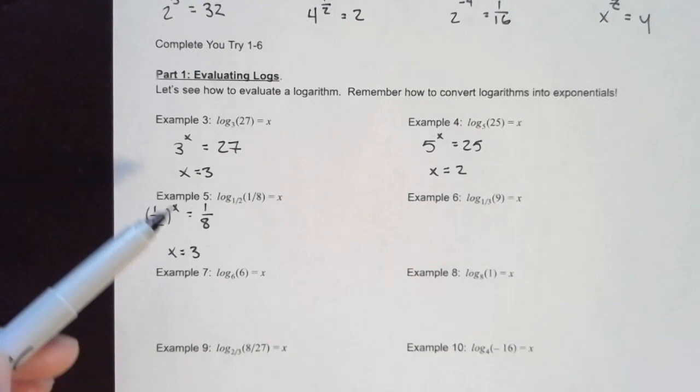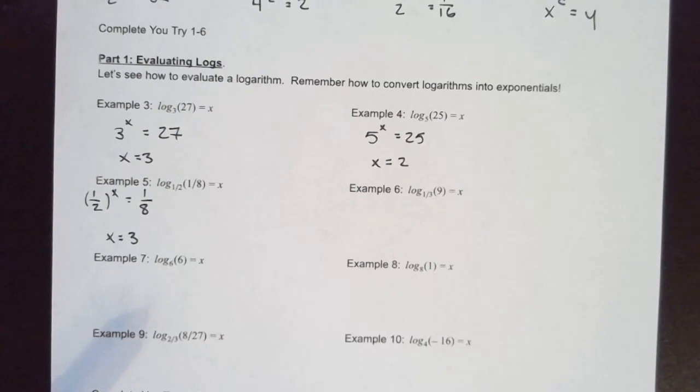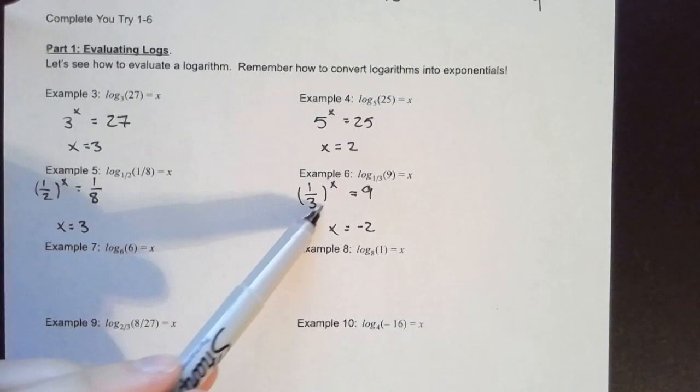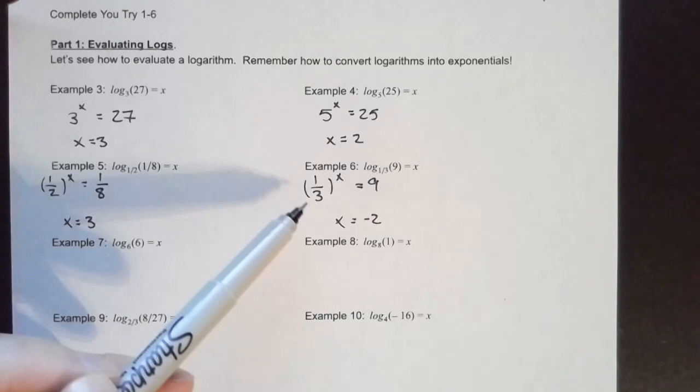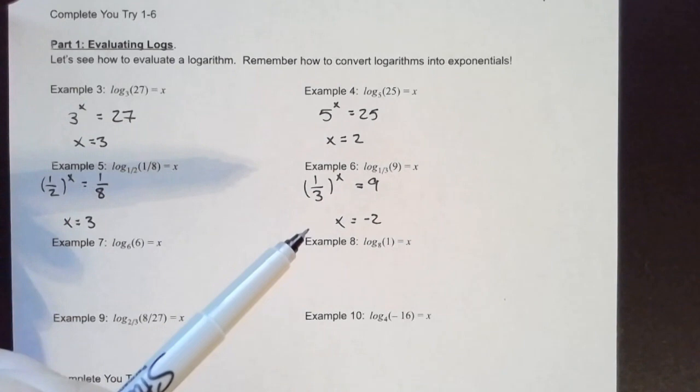Looking at example 6, when I convert to exponential form I can see that going from my base to my solution it's inverted — from a fraction to a whole number — which is a clue that my exponent should be negative. I want to bring this 3 up here, so I need to make the exponent negative.